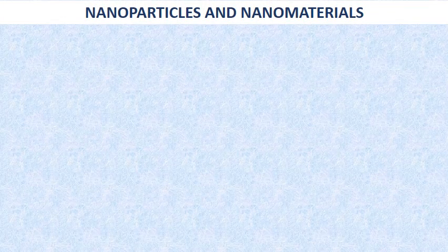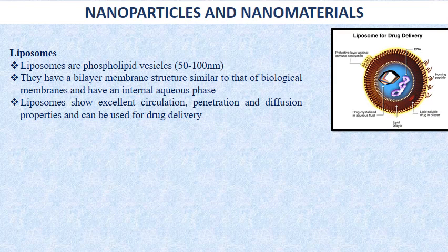Here is a short overview of nanoparticles and nanomaterials used in nanomedicine. The first is liposomes — phospholipid vesicles 50 to 100 nanometers in size. They have a bilayer membrane structure similar to biological membranes and an internal aqueous phase. They show excellent circulation, penetration, and diffusion properties and can be used for drug delivery. They are double-layered structures where you can trap therapeutic agents inside, which dissolve and release inside the cell. They improve therapeutic index by modifying drug absorption, reducing metabolism, prolonging biological half-life, or reducing toxicity.